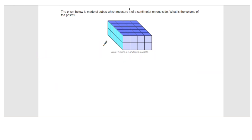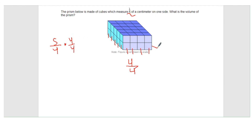Another easy way: I have five cubes along the length, so my length is five fourths. I have four cubes along the width, so that's four fourths. I have two cubes for the height, so that's two fourths. The numerator is going to be the total number of cubes, which is 40. And the denominator is going to be the denominator for the volume of one cube, which is 64. So either way you go, you get the same answer: 40 over 64, simplified to five eighths.